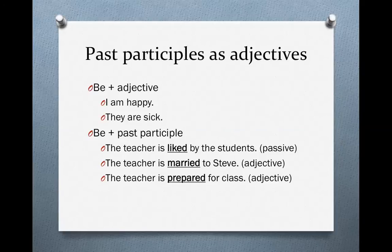You know basic sentence structure in English. You can take a subject, a form of the verb be, and an adjective, and that makes a sentence. For instance, "I am happy" — the subject is I, the verb is be, and after the verb be we put an adjective: happy. Or "they are sick" — subject is they, the form of the verb be is are, and after the verb be we put the adjective: sick.